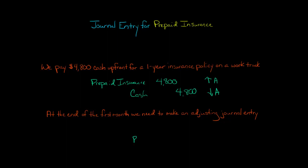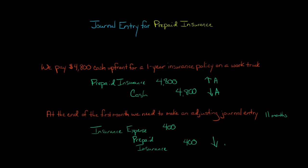We're going to credit the prepaid insurance account for $400 after one month has gone by — we're decreasing it. We're going to debit insurance expense. Expenses are recognized when you use up an asset, which is what's happening here. We bought this prepaid insurance and recognized it as an asset, but over time we don't have as much of the policy left. After the first month, we only have 11 months remaining, so our asset should decrease.